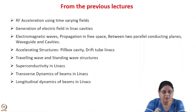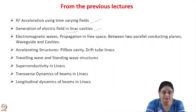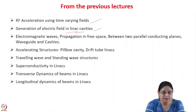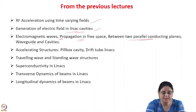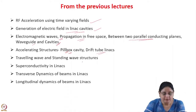From the previous lectures, we have learned how RF acceleration can be done using time varying fields. We have learned how to generate these electric fields in linear cavities, utilizing the electric fields associated with electromagnetic waves in a high Q cavity. We have studied electromagnetic waves, their propagation in free space, between two parallel conducting planes, wave guides and cavities. We have also studied some accelerating structures like a simple pillbox cavity, studied the different modes and field patterns, and also studied about the drift tube linac. We studied about the travelling wave and standing wave structures.